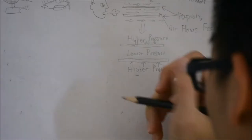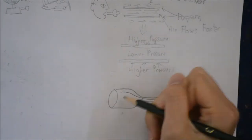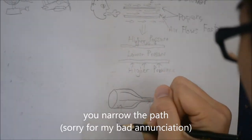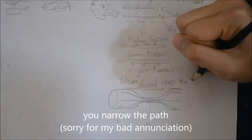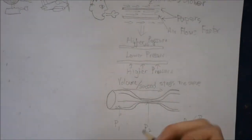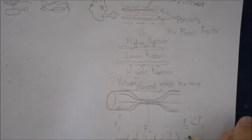You can also observe this principle by pinching a water hose. By pinching the hose, you narrow the path of the fluid flow, which speeds up the molecules and lowers the pressure exerted by the fluid in the narrower part of the hose. This causes the water to shoot out from the end of the hose at a higher speed.